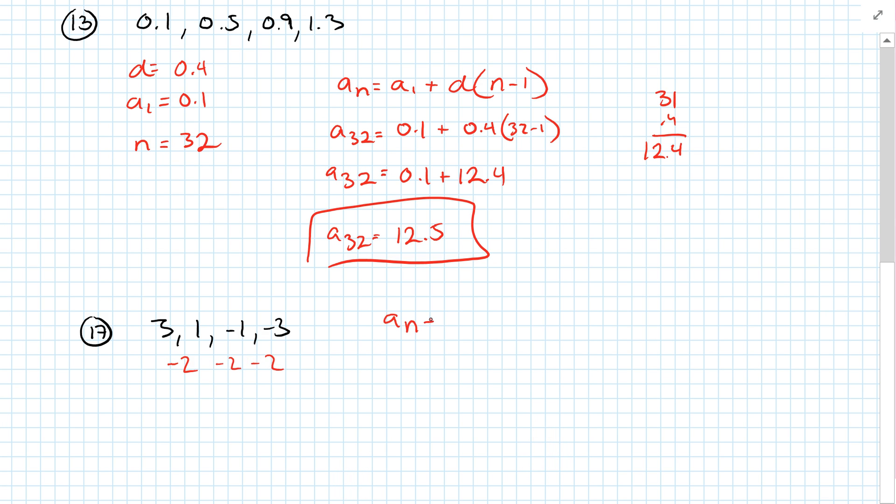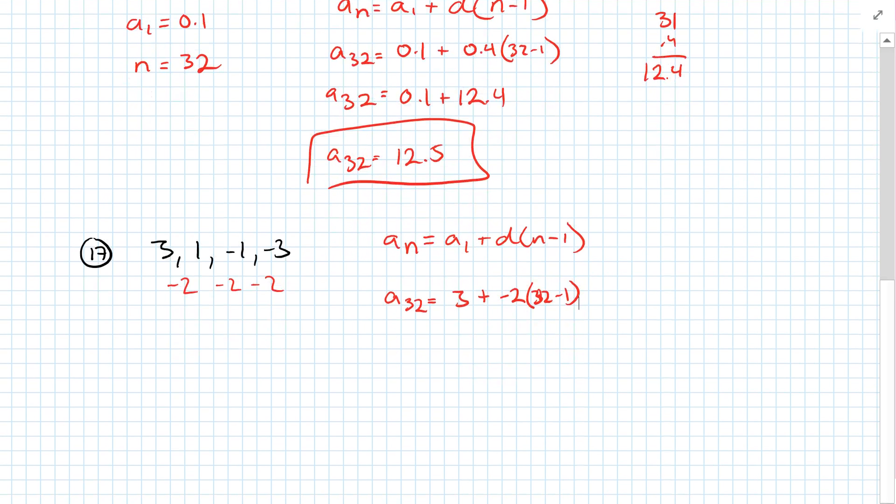So A sub N equals A1 plus D times N minus 1. So A of 32 equals 3 plus negative 2 times 32 minus 1. So A of 32 is going to equal 3 plus, so 32 minus 1 is 31, 31 times negative 2 is negative 62. So A of 32 is going to be negative 59.